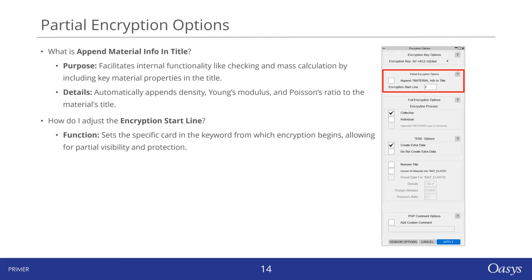For partial encryption, you have a couple of choices to tailor the encryption to your needs. The first option is append material info in title, which is particularly useful for mass calculations within Primer — it works by adding key material properties like density, Young's modulus, and Poisson's ratio directly to the material's title. The second option is the encryption start line, which gives you control over where your partial encryption begins. You can specify the exact card line where encryption starts, allowing you to protect sensitive data while leaving other parts open. This level of customization ensures you're encrypting exactly what you need — no more, no less.